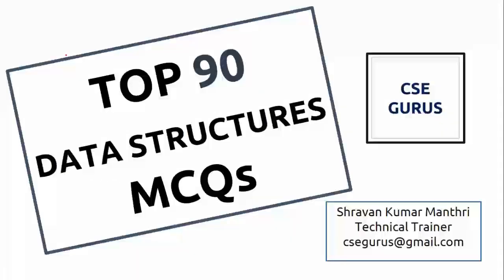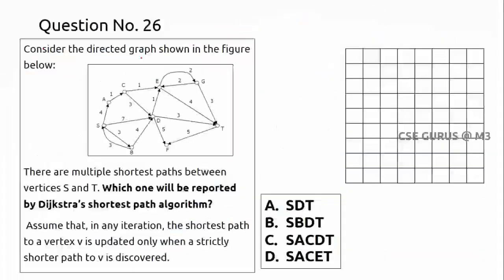Welcome to CSC Gurus. Question number 26 is related to a graph shown in the figure below. There are multiple shortest paths between vertices S and D. Which one will be reported by Dijkstra's shortest path algorithm? Assume that in any iteration, the shortest path to a vertex is updated only when a strictly shorter path is discovered.